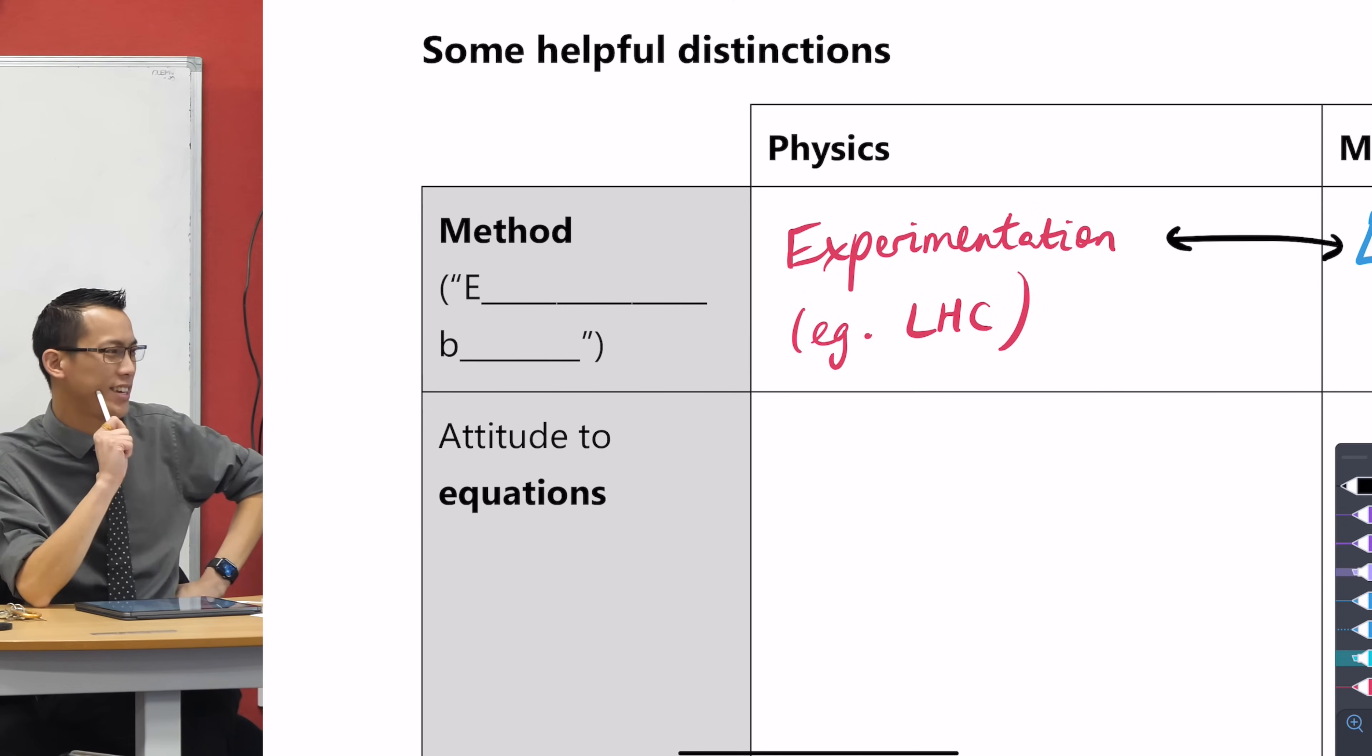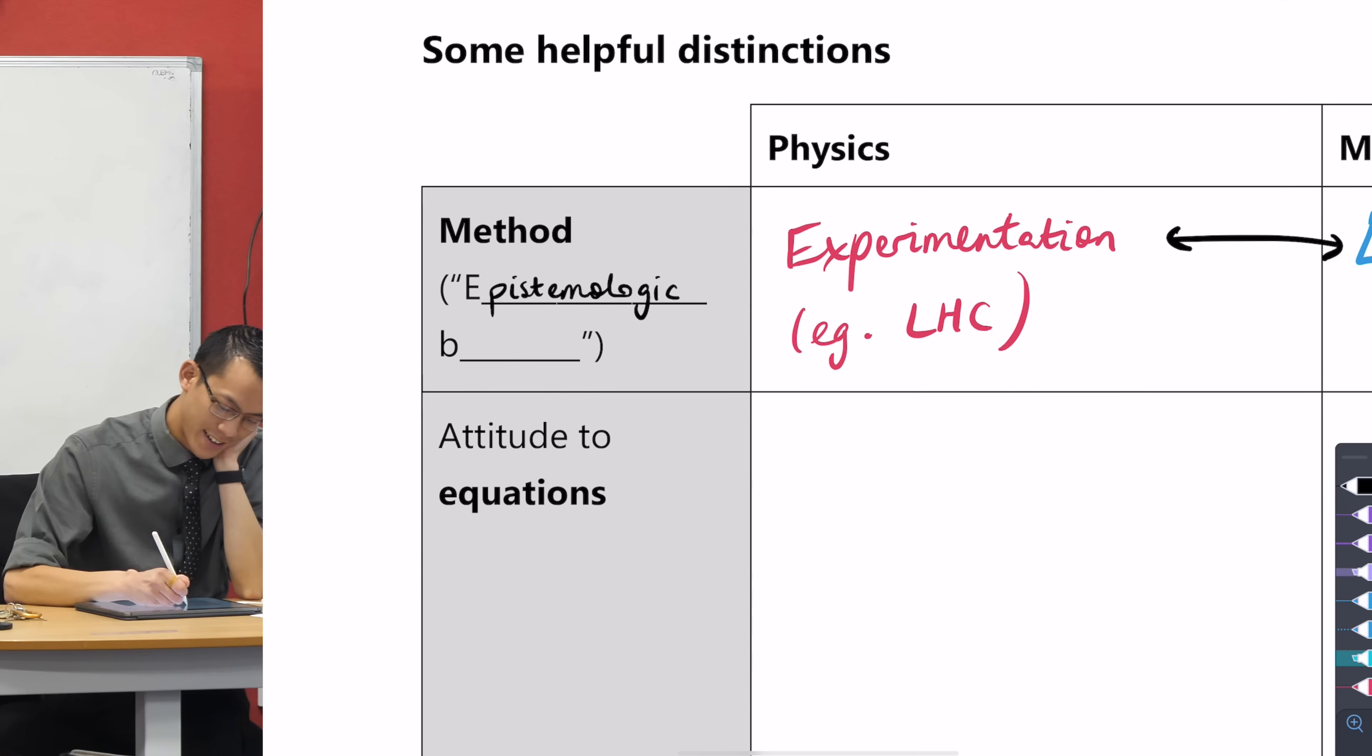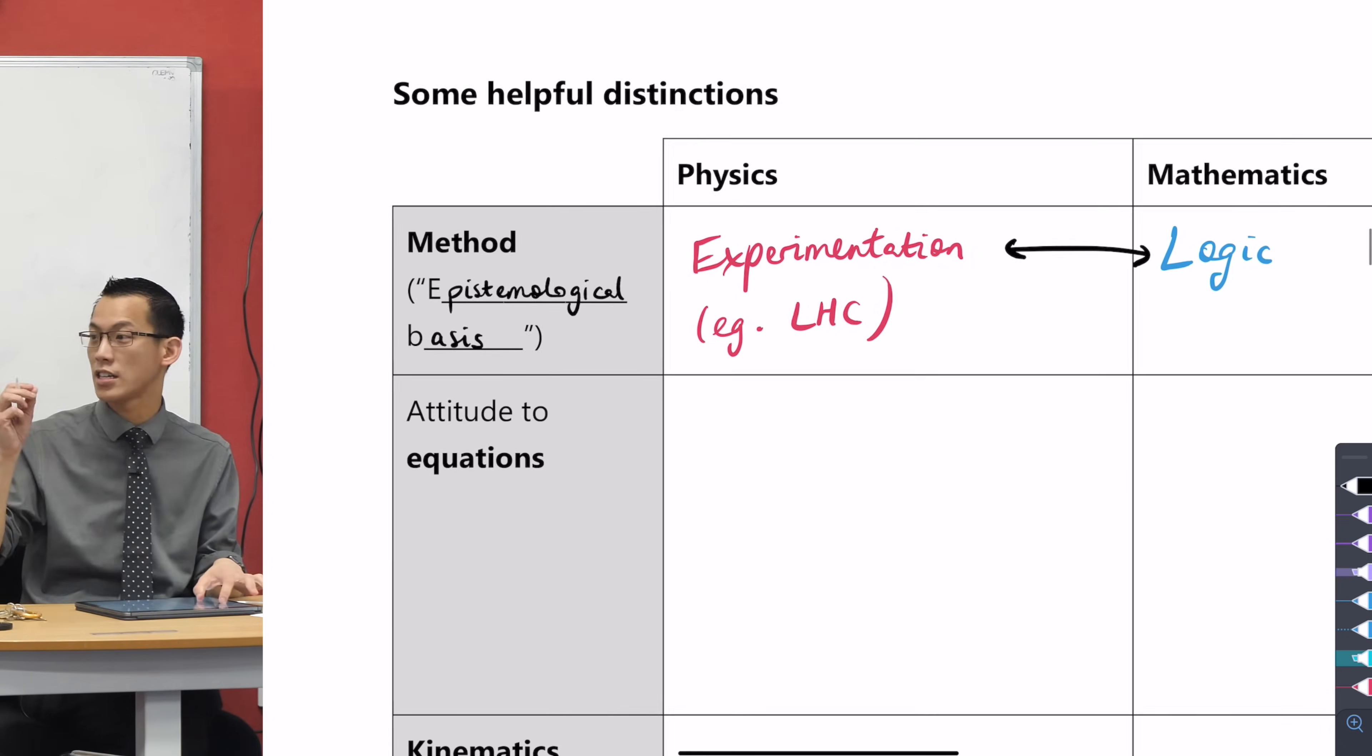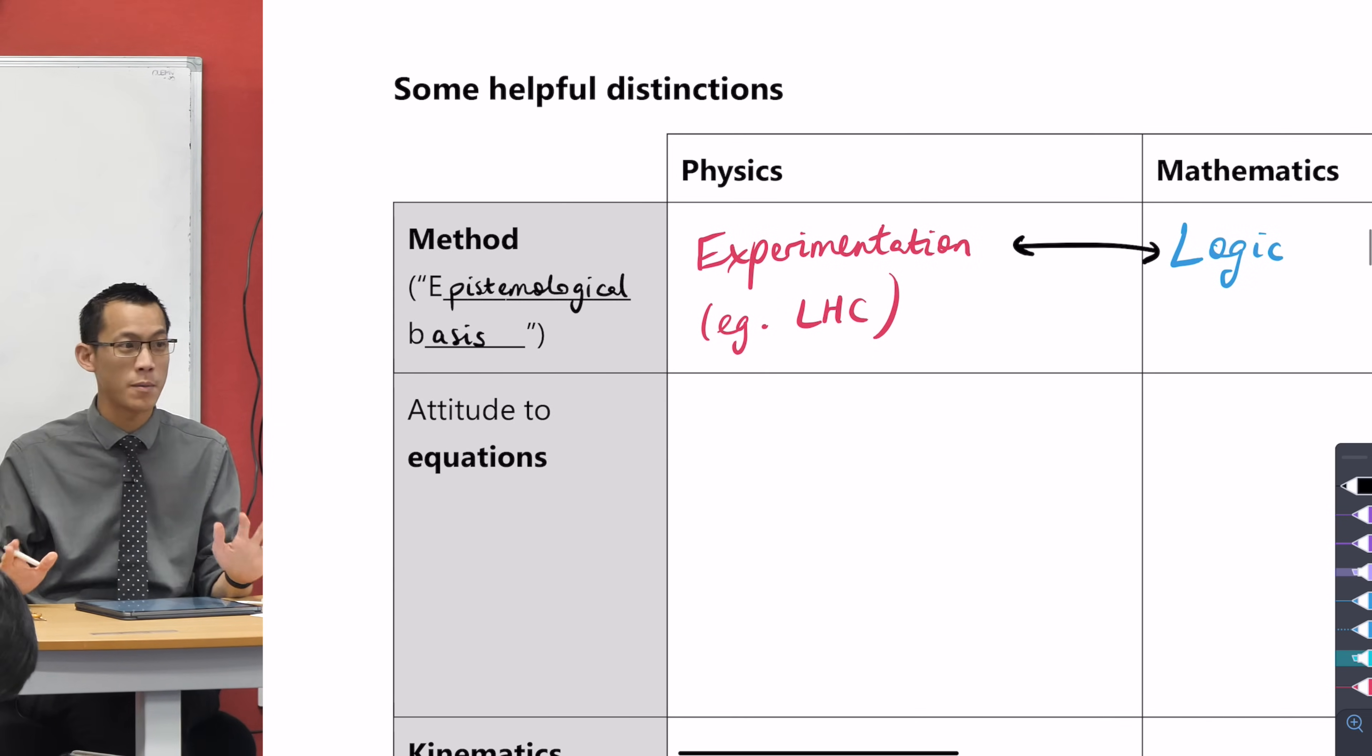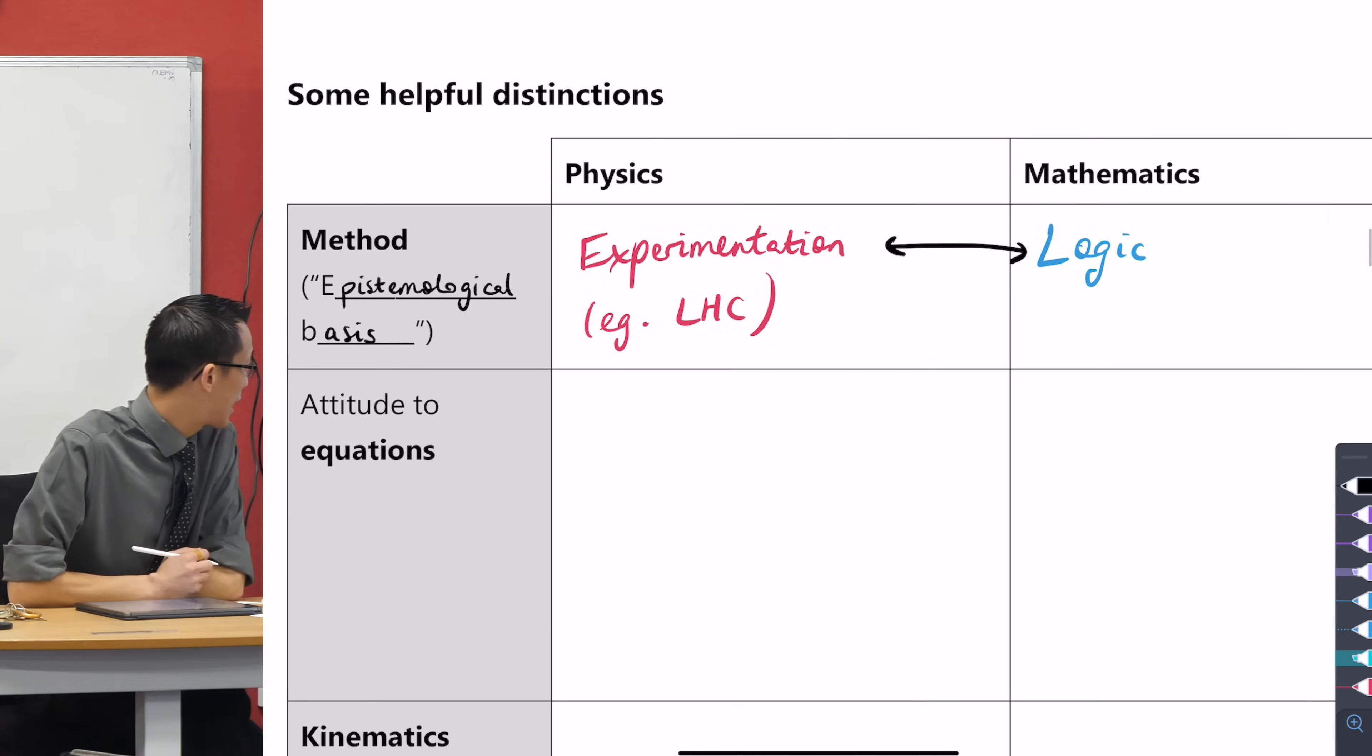Okay, now I'm going to give you a fancy name for this. Well, in terms of the method of knowing something to be true, what philosophers would call this is the epistemological basis. This is just so that when you get to uni you can use fancy words. Epistemology is how do you know something is true or not? The epistemological basis in physics is experimentation. You got no experiments, you got nothing. In mathematics, it's logic.